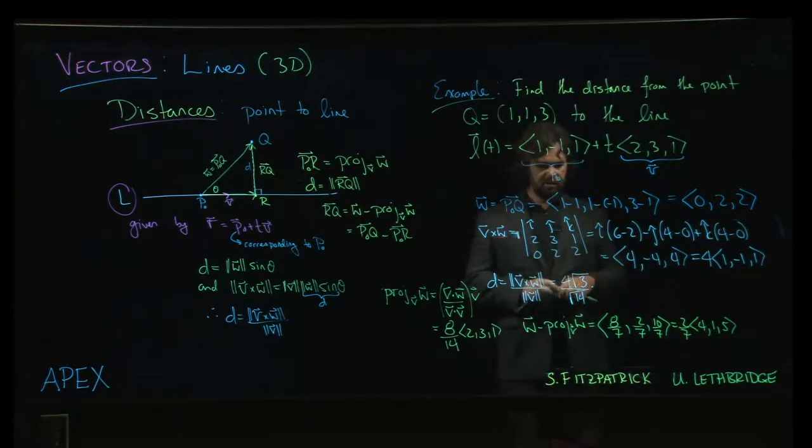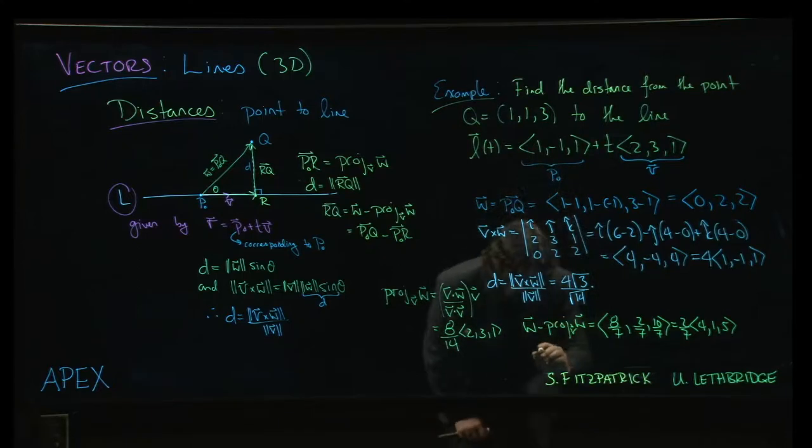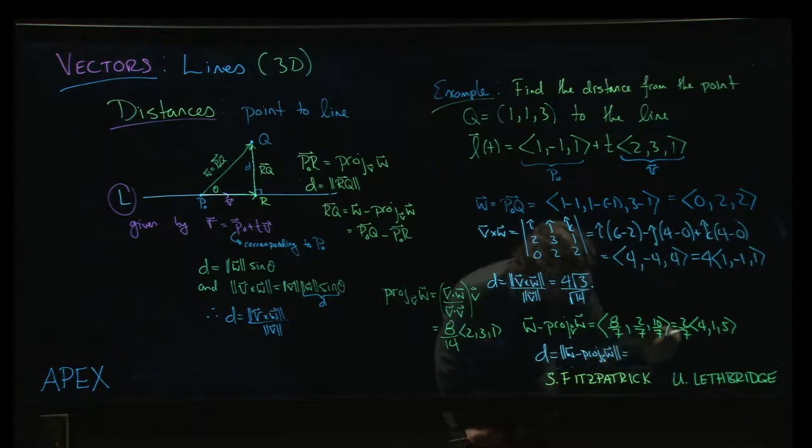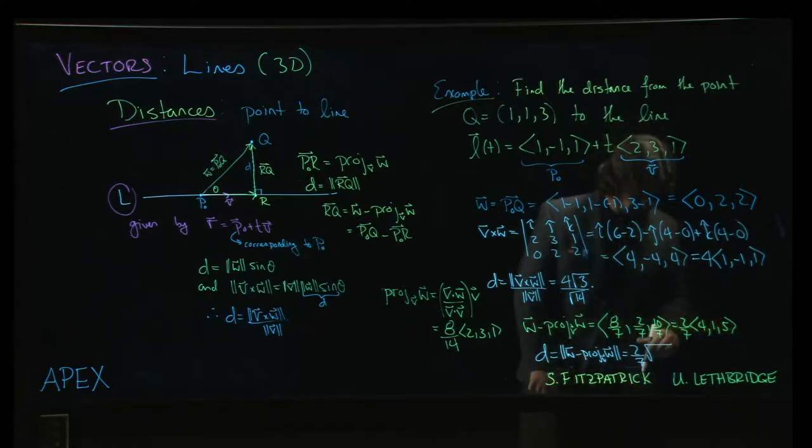So here's the funny thing. The distance should also be given, and again, it's quite possible I made arithmetic mistakes here. So double check my work. The distance should also be the magnitude of this particular vector. So we can do 2 over 7 times, well that's going to be 25, 26 plus 16, 42.